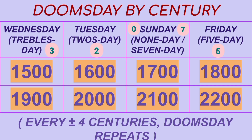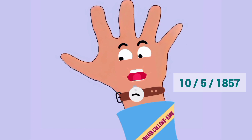Doomsday by century: 1500 is a Wednesday (doomsday 3). 1600 is a Tuesday (doomsday 2). 1700 is a Sunday (doomsday 0). 1800 is a Friday (doomsday 5). Every plus or minus 400 centuries, doomsday repeats — so 1500 plus 400 equals 1900, which is again a Wednesday (doomsday 3).